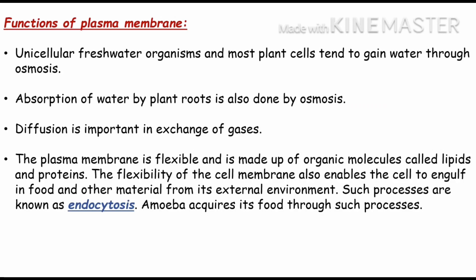Diffusion is important in exchange of gases. Jaise ek poori body ko survival ke liye oxygen intake ki zaroorat hoti hai, waise hi ek cell ko bhi oxygen chahiye hoti hai jo wo diffusion se andar leta hai. The plasma membrane is flexible and is made up of organic molecules called lipids and proteins. Organic molecules woh hote hain jo normally living systems mein hi milte hain aur carbon, oxygen, hydrogen aur nitrogen se milkar bane hote hain. The flexibility of the cell membrane enables the cell to engulf food and other material from its external environment — is process ko endocytosis kehte hain. Amoeba, jo ek unicellular organism hai, apna food isi process ke through khata hai.